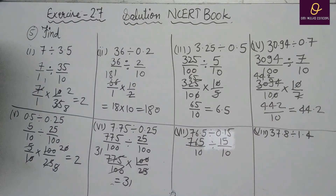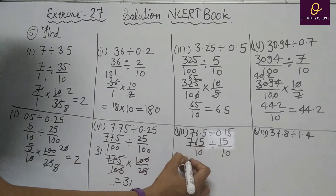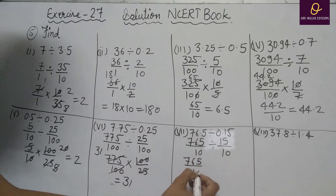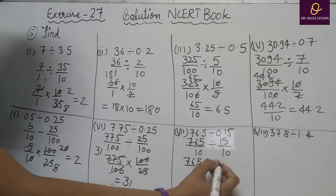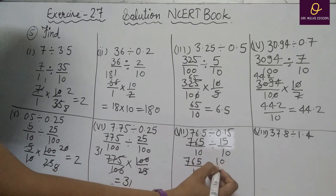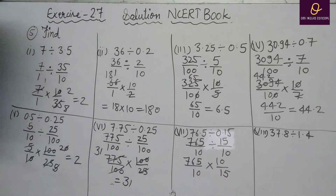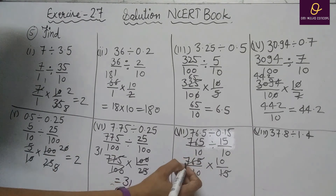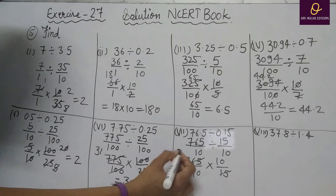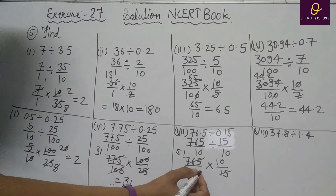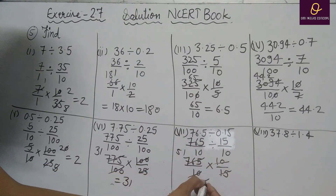Part G: Remove decimal. After removing decimal, divide changes to multiply and reciprocal of 15 by 10 is 10 by 15. Cancel 15 with 75 (15×5=75), and 10 with 10. Final answer is 5.